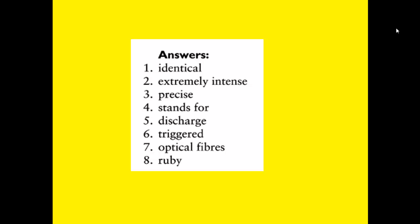Number 5: something which is given out is discharge. Number 6: started or set off is triggered. Number 7: long or very thin pieces of transparent material is optical fibers. And number 8: deep red precious stone is ruby. Now by doing this exercise number B on page number 41 in unit 6 in our workbooks my students, we can conclude this lesson.